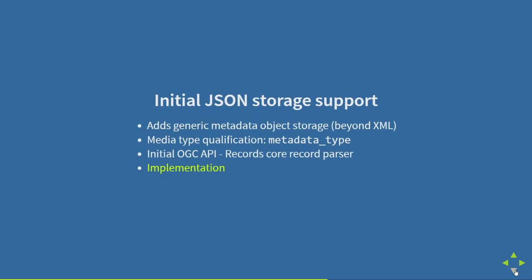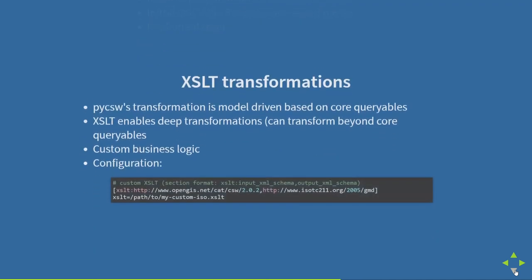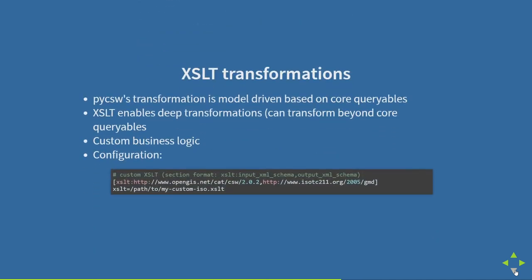JSON support sets us up for the new generation of OGC and other evolving specifications. With the XSLT transformation, in your configuration you define the input metadata standard and the output metadata standard and provide a path to where your XSLT is on disk. PyCSW configuration also supports environment variables, so for cloud deployments where 12-factor type approaches are important, we support that as well.